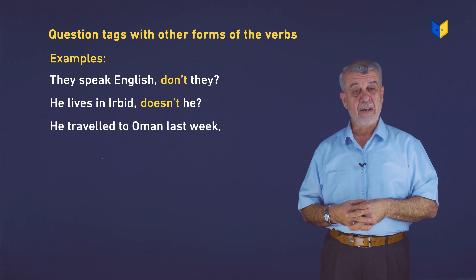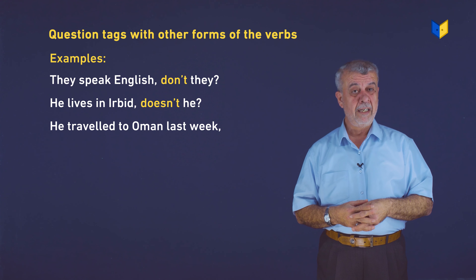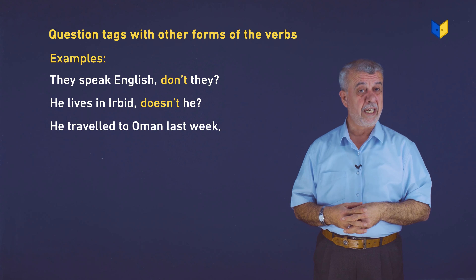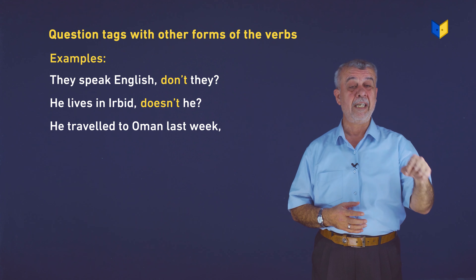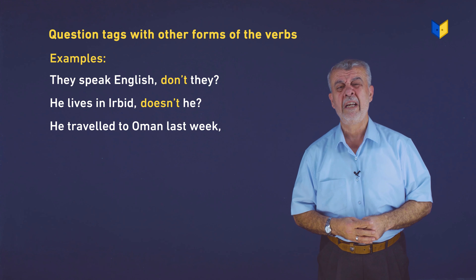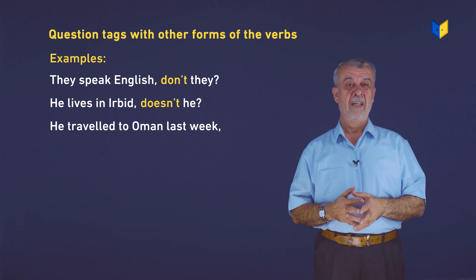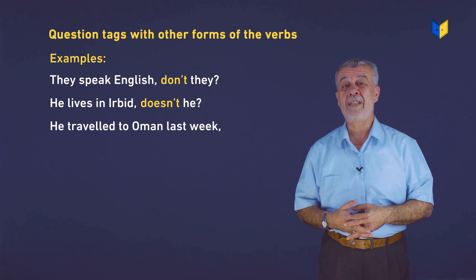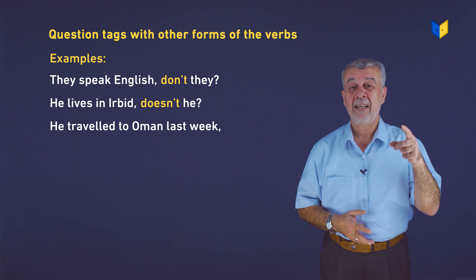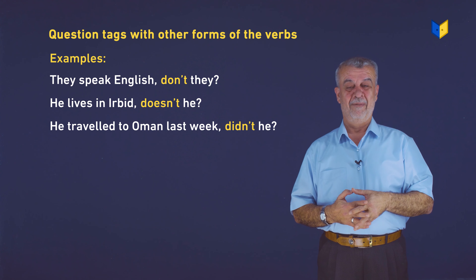Now let's have a verb in the past. 'He traveled to Oman last week' — traveled has the ending -ed, so it's past. Can we say doesn't he? No. Don't he? No. What do we say? Didn't he.